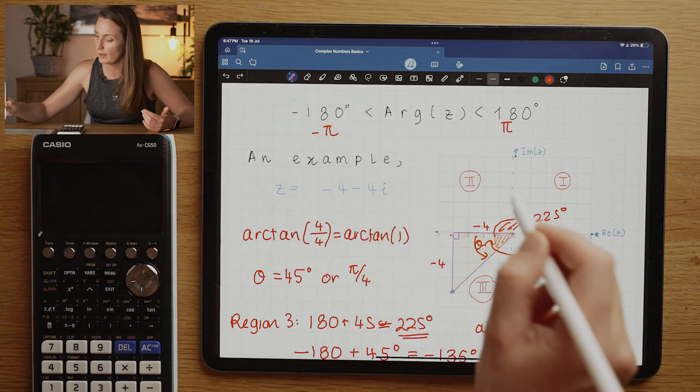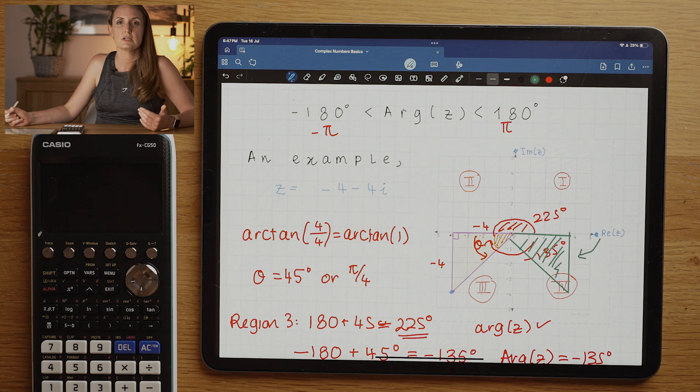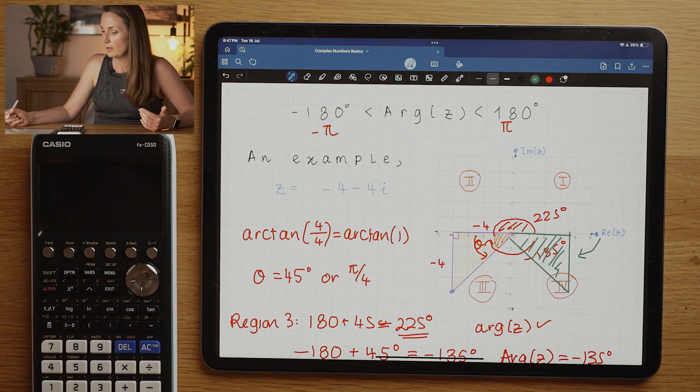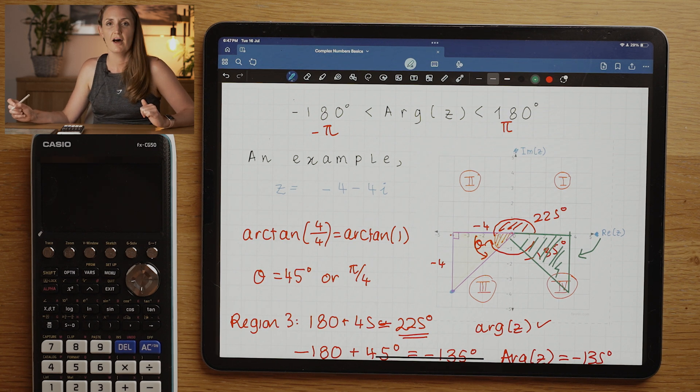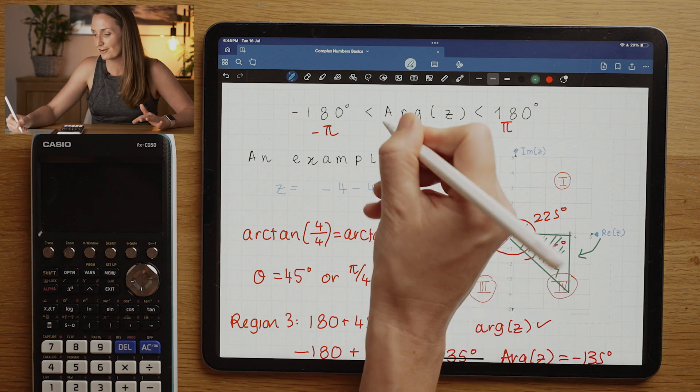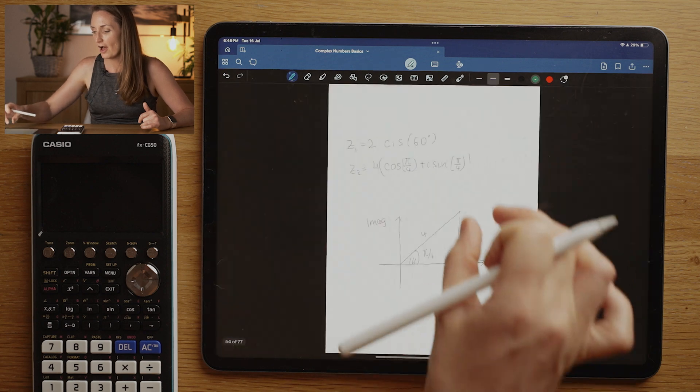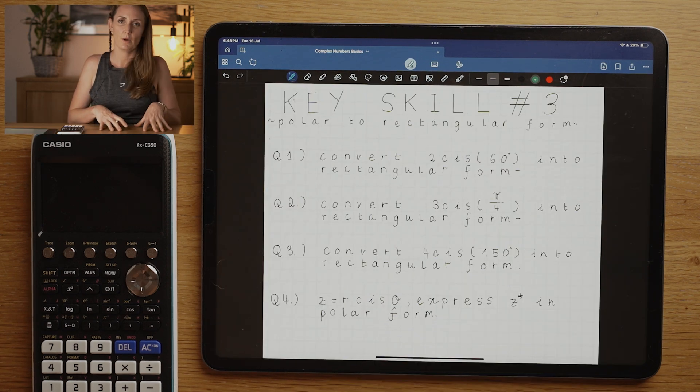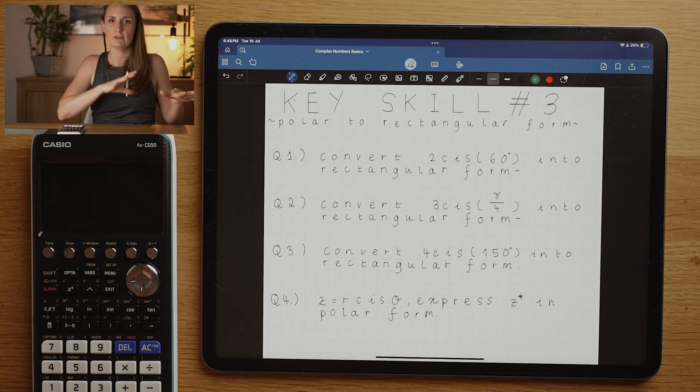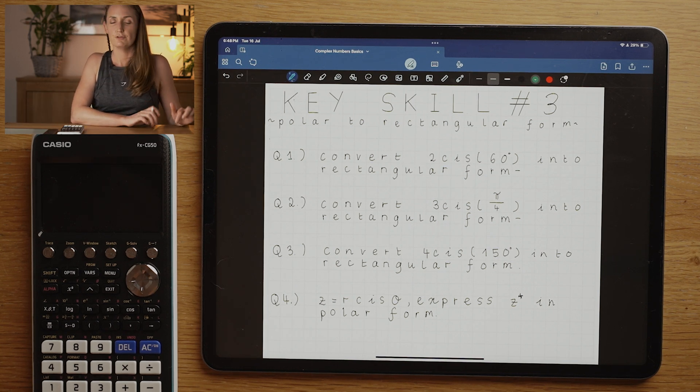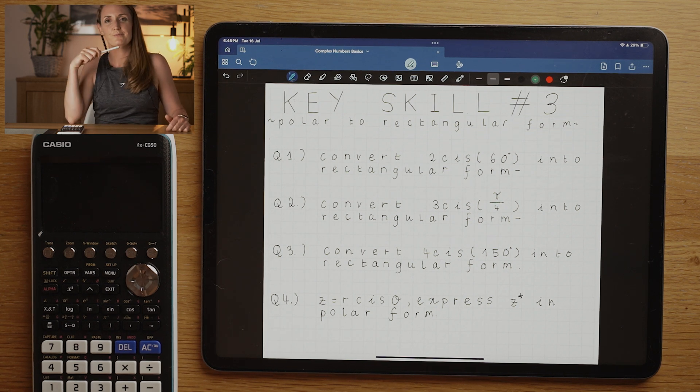In fact, if you're in region four it's still pretty easy. You could just start here and calculate the acute angle and just change the sign. So that is the difference between principal argument and the argument. That really confused me for a long time when I was a student and I never really got the difference, so I hope I've explained that to you so you won't have the same problems. In the next video we're going to be going the opposite direction. We're going to be starting in polar form and converting into rectangular form. So stick around for that. Good job today guys, keep studying and I'll see you in the next video. Bye for now.